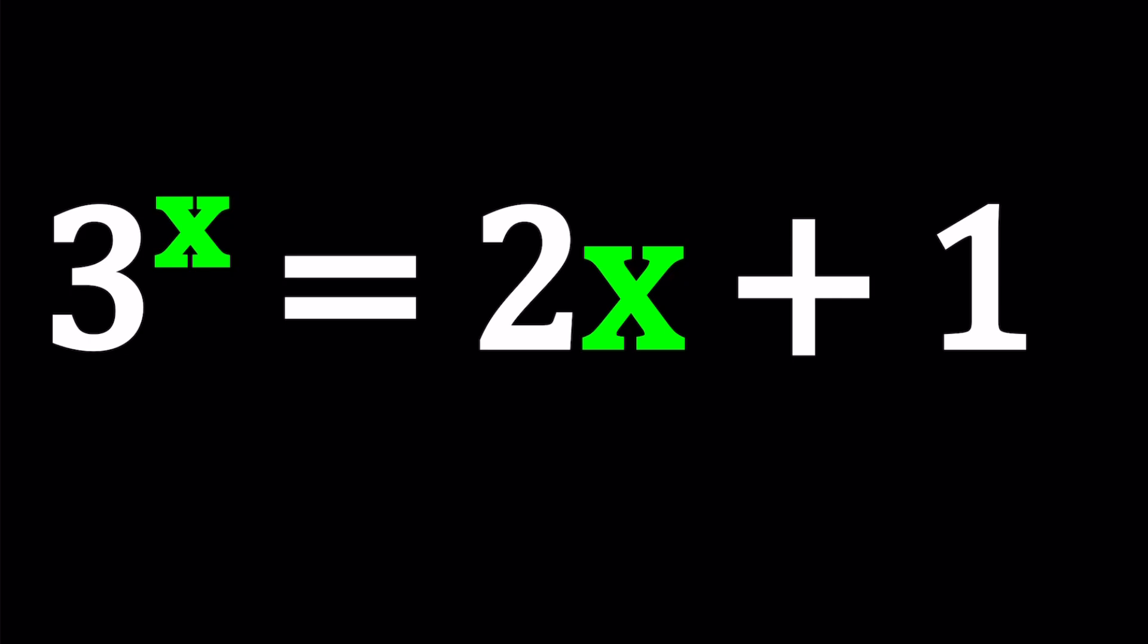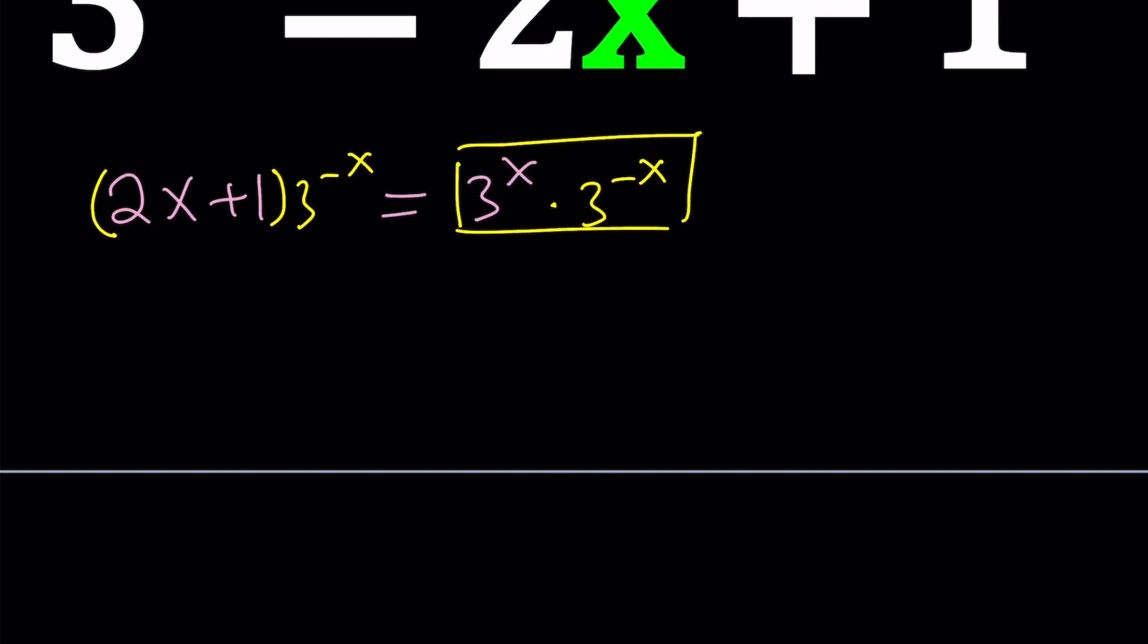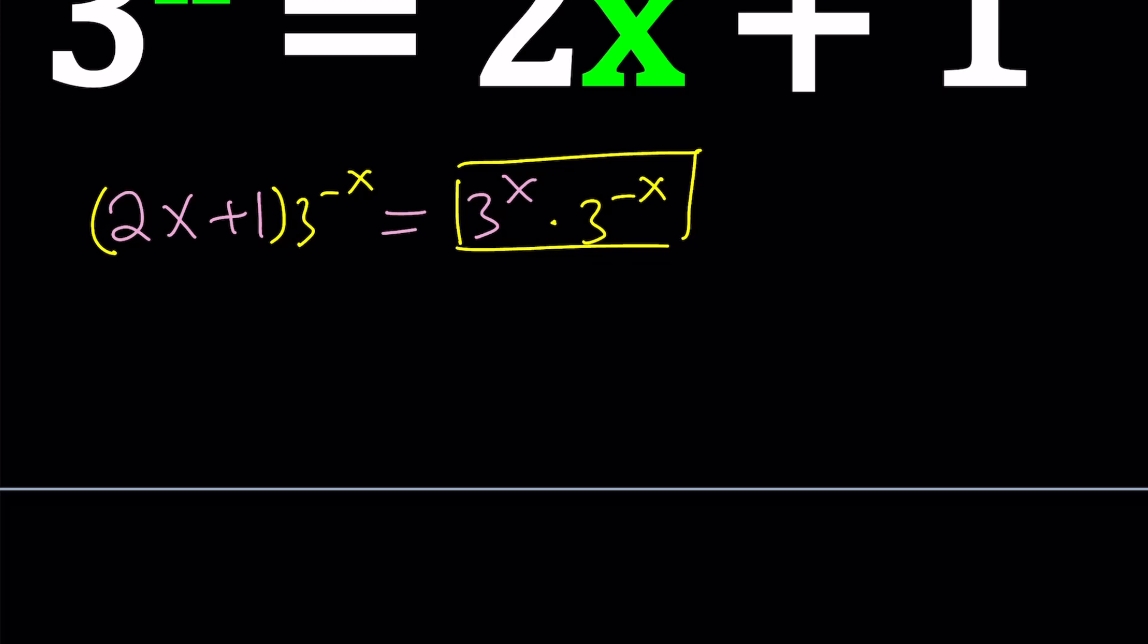We can multiply. Probably leave some space there. And multiply both sides by 3 to the power negative x. And what that will do is give you 1 here, because those are reciprocals, or you can think of it as 3 to the power 0, which is 1. So, we get 2x plus 1, multiply by 3 to the power negative x equals 1. Great.